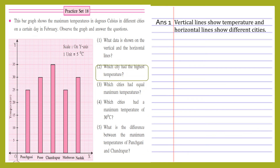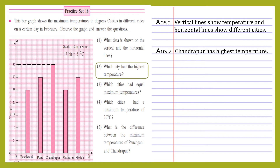Question 2: Which city had the highest temperature? Let's see which rectangle has the highest height. A dotted line is pointing towards 35 degrees centigrade on the y-axis. Tell me, children, which city has this highest temperature? Yes, it's Chandrapur. So we write: Chandrapur has the highest temperature.